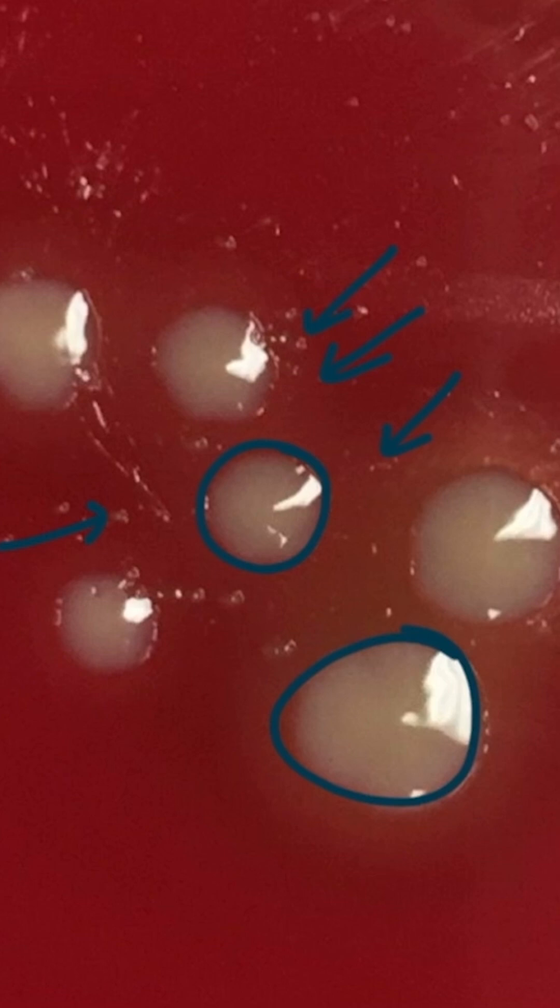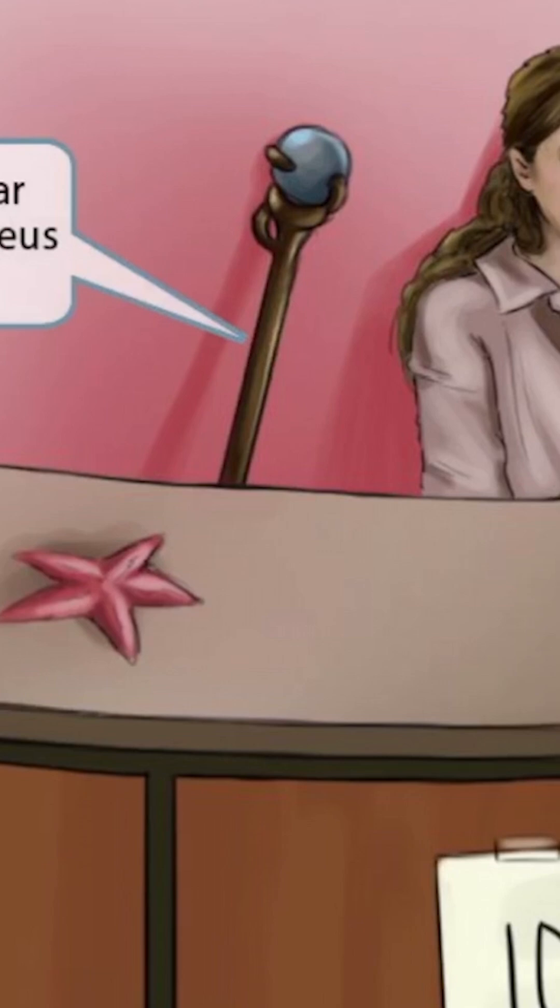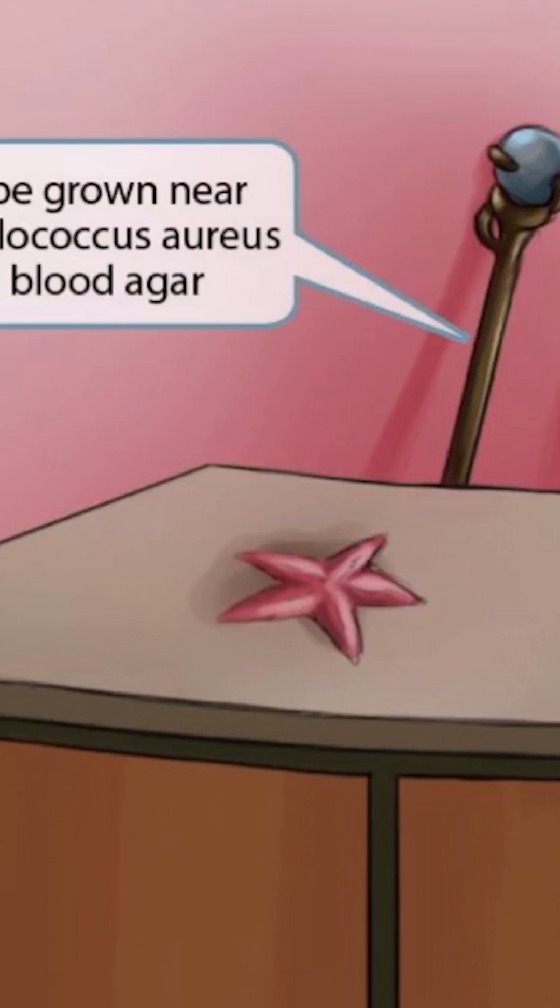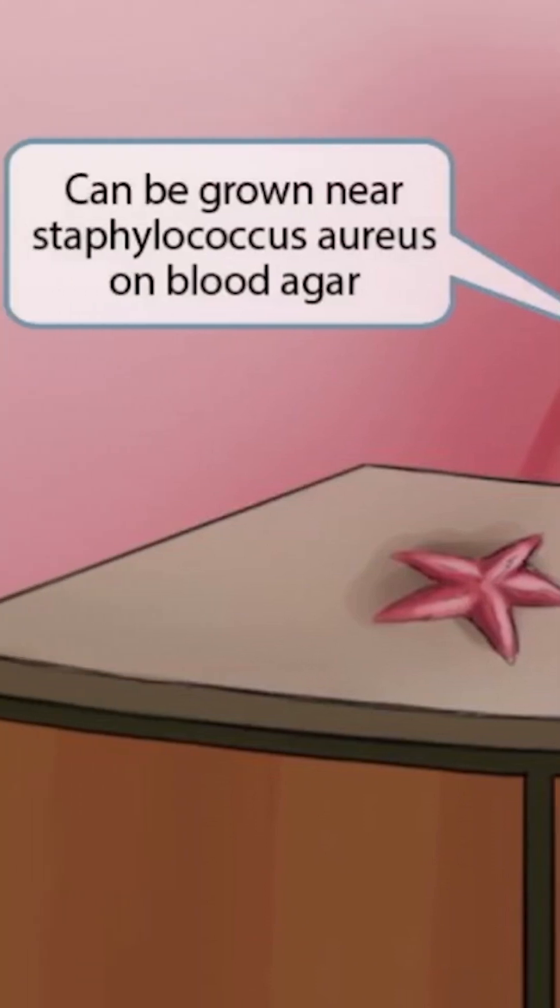Now let's return to the image to help you memorize these details. First, notice that we've shown a Staph leaning up against the wall behind Pamelin. This is a reference to our Staph aureus video and is to help you remember that H. flu can be grown near Staph aureus on blood agar.